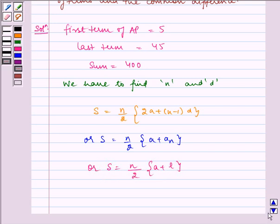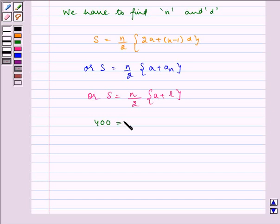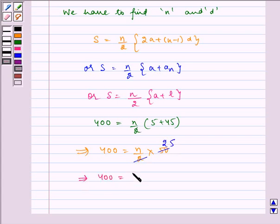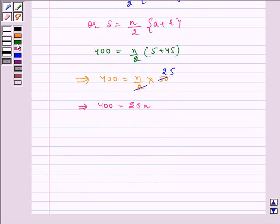Substituting the values, we get 400 is equal to N by 2 multiplied by 5 plus 45. This gets cancelled by 25, so 400 is equal to 25N, which implies N is equal to 400 by 25, which gets cancelled by 16, so N is equal to 16.